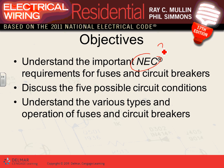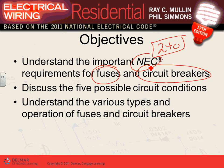Article 240 is the article that talks about overcurrent protection devices for equipment and conductors. We'll talk about requirements for fuses and circuit breakers. And any electrical power circuit — in fact, any control or power circuit — has typically five conditions we're going to go through.